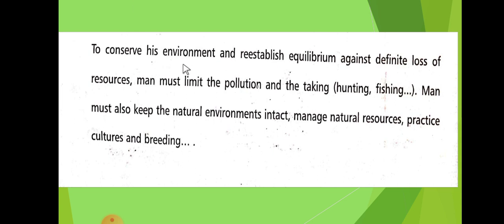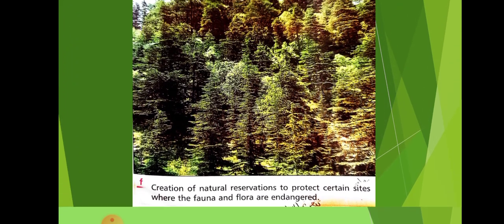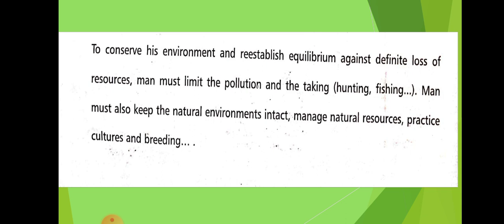To conserve his environment and re-establish equilibrium against definite loss of resources, man must limit the pollution and the hunting — الاستياد والفشن. Man must also keep the natural environment intact — سليمة. He must manage natural resources by creating natural reserves where harmful actions are prohibited. And practice culture and breeding — يزرعوا زراعة كتير وبيهجنوا الحيوانات — to allow animals to reproduce and increase the fauna.